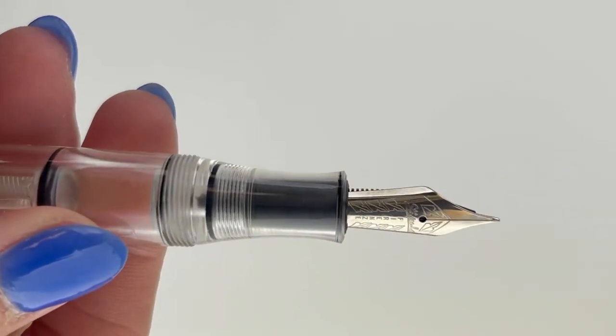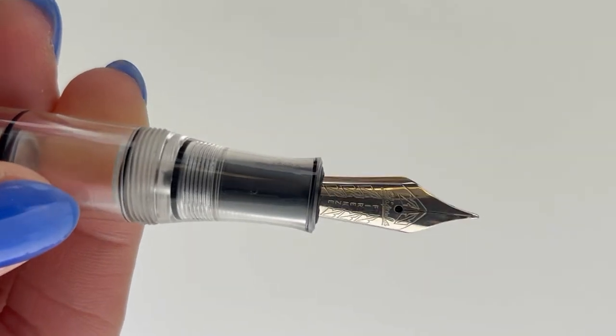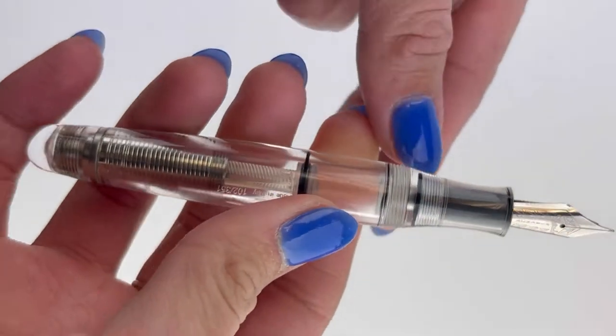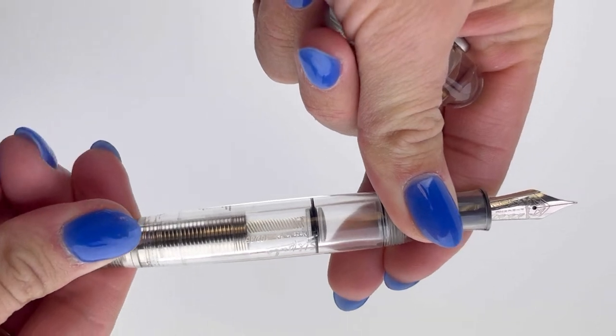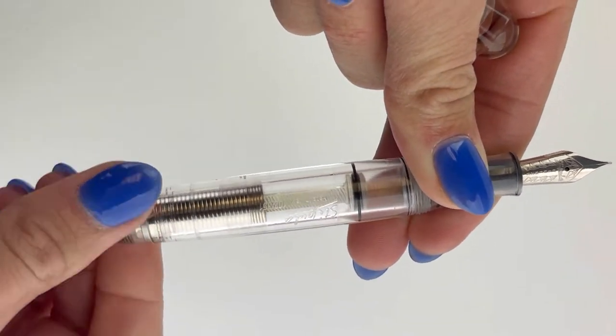It has a threaded cap, and your Stipula Etruria Rainbow is fitted with a 14 karat gold Stiflex Fountain Pen nib. You have that really crystal clear view of the piston mechanism inside the pen.